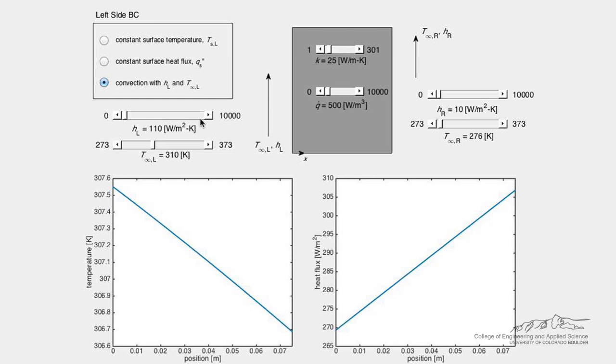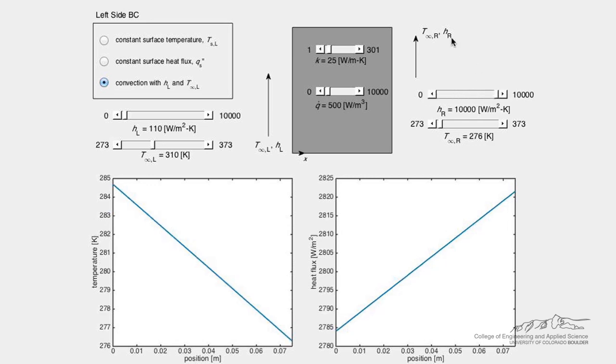Note that to simulate a constant surface temperature on the right-hand boundary, increase the heat transfer coefficient h sub r to infinity.